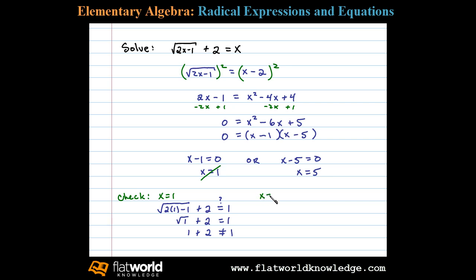Let's next check x equals 5. Substituting 5 in we have the square root of 2 times 5 minus 1 plus 2. Well we're going to see if that equals 5. 2 times 5 minus 1 is 10 minus 1 or the square root of 9, plus 2. Well the square root of 9 is 3. 3 plus 2 certainly equals 5. So x equals 5 is our only solution.